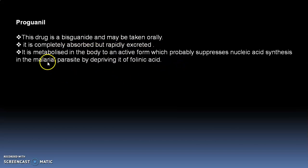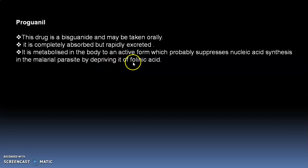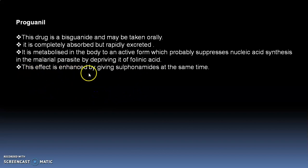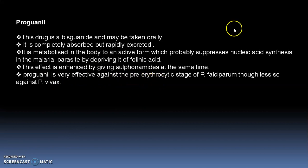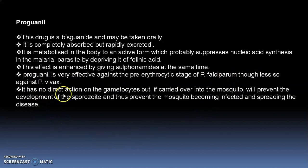For the pre-erythrocytic stage, proguanil is used. It is a biguanide and may be taken orally. It is completely absorbed but rapidly excreted. It is metabolized in the body to an active form which suppresses nucleic acid synthesis in the malarial parasite by depriving it of folic acid. This effect is enhanced by giving a sulfonamide at the same time. Proguanil is very effective against the pre-erythrocytic stage of Plasmodium falciparum, though less effective against Plasmodium vivax. It has no direct action on gametocytes, but if carried over into the mosquito, it will prevent development of sporozoites and thus prevent the mosquito from spreading the disease.